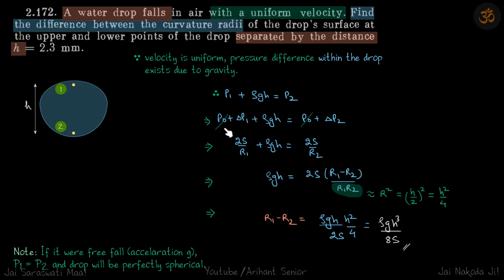The curvature radius there, let's say, is r1. So excess pressure will be 2S/r1. And here similarly, excess pressure will be 2S/r2. We need to find what is r1 minus r2. So we write ρgh is equal to 2S(r1 - r2)/(r1r2). r1r2 can be assumed to be r².